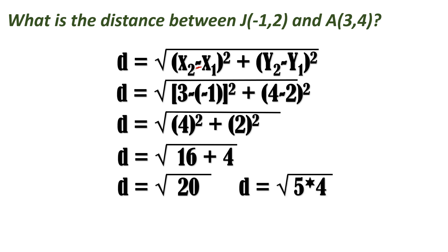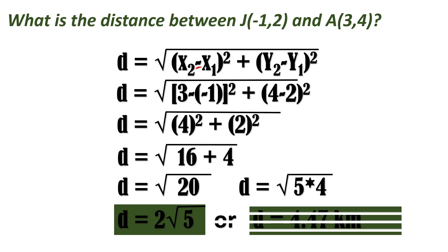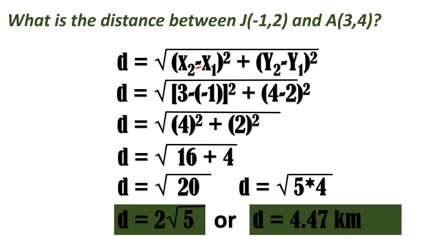If you don't want to use a calculator, you can simplify the square root of 20: it equals the square root of 4 times 5, and since 4 is a perfect square, it comes out as 2 square root of 5. If you prefer a decimal answer, press square root of 20 on your calculator and you will get 4.47 kilometers as the distance between the two houses.